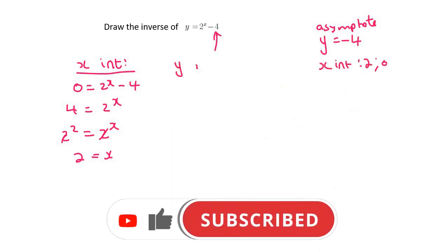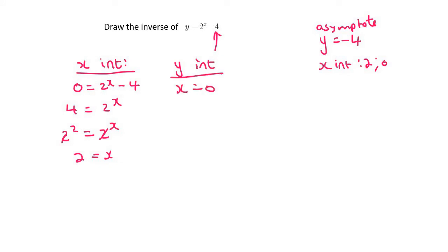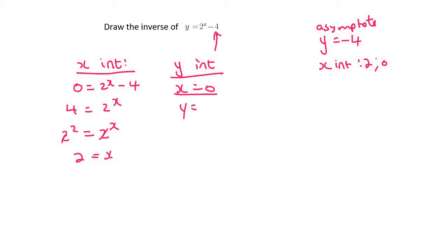To find our y-intercept, you make x equal to 0. Now, be careful here — a lot of people just scratch this out, but that's not true. It actually becomes 2 to the power of 0. Now, 2 to the power of 0 is 1, and so your y-intercept is minus 3. That's going to be the point (0, -3).